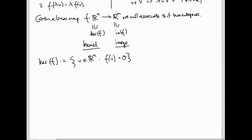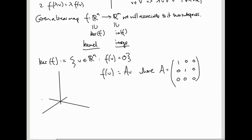So let's just do an example and see what the kernel is. Let's take F of V to be AV, where A equals the matrix (1,0,0; 0,1,0; 0,0,0). So this is a map from R^3 to R^3, which is why I've drawn these axes over here. This is almost the identity, except in the bottom right we have a zero instead of a one. And you can check that if I apply A to (X,Y,Z), I just get (X,Y,0). So this is a vertical projection onto the XY plane.